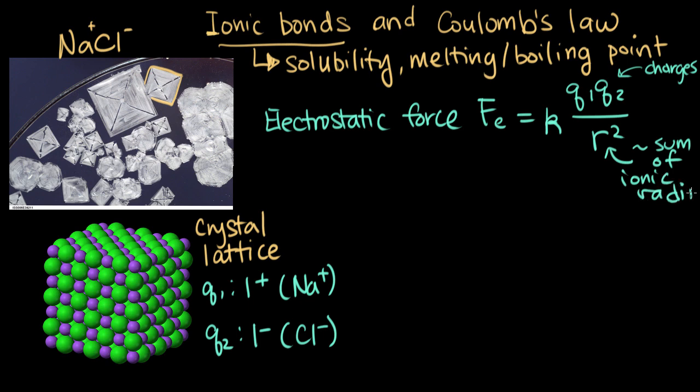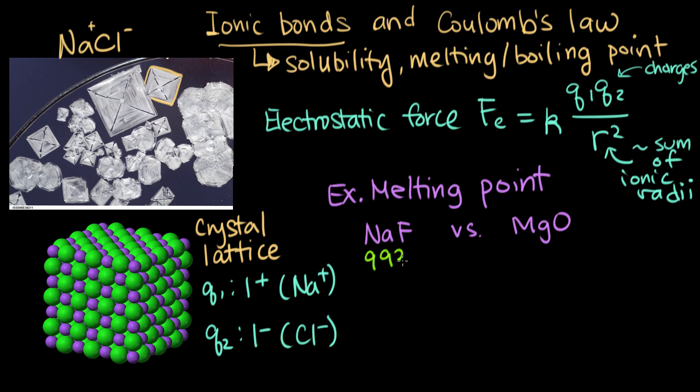We can use Coulomb's law here to explain some properties that are related to the strengths of ionic bonds. The example we're going to go through today is that of melting point. We're going to look at some melting point trends and try to relate them to the different variables in Coulomb's law. The first two compounds we'll compare are sodium fluoride and magnesium oxide.